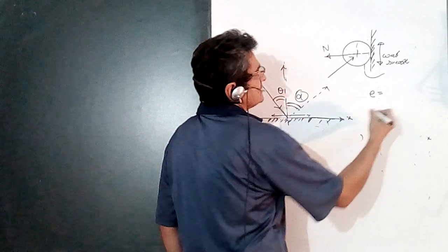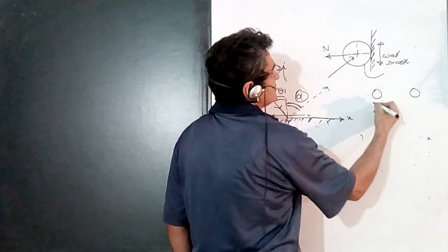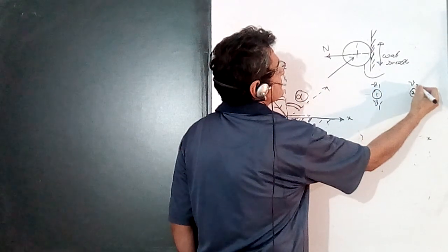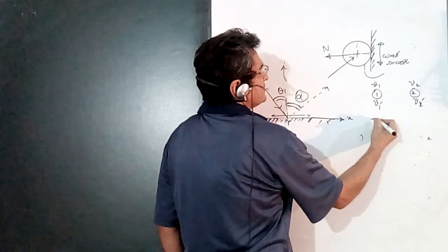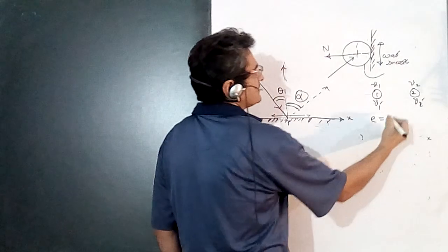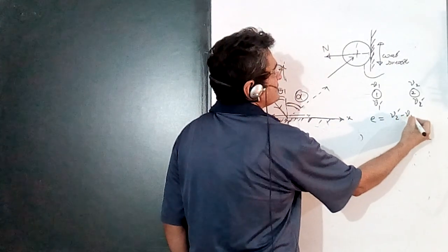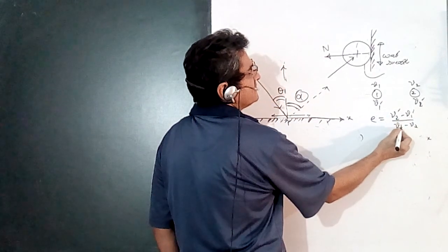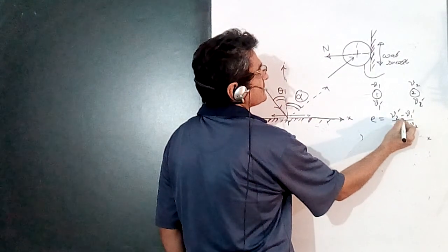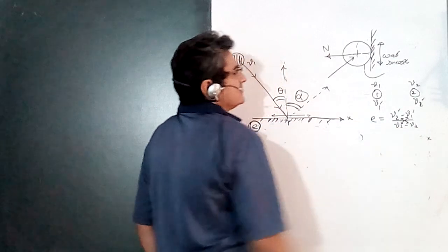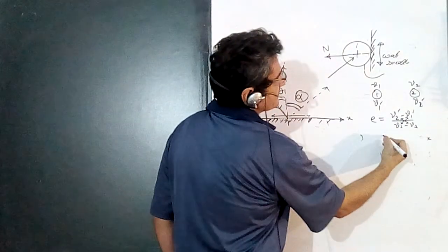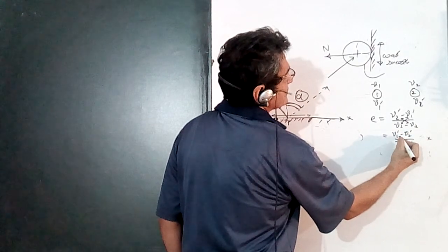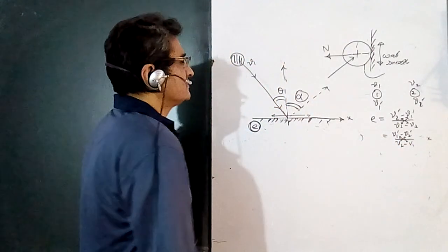The formula for coefficient of restitution for a two-body collision: if body 1 has initial velocity v1 and final velocity v1-dash, and body 2 has initial velocity v2 and final velocity v2-dash, then e equals velocity of separation upon velocity of approach: e = (v2' − v1') / (v1 − v2). Be careful — the suffixes cross. You can also write it as (v1' − v2') / (v2 − v1), but writing it any other way will give wrong results.